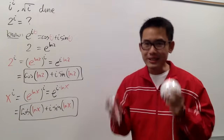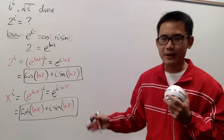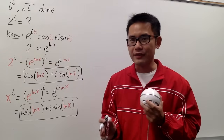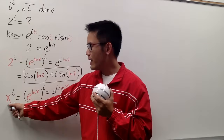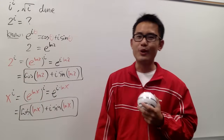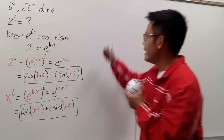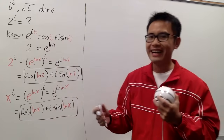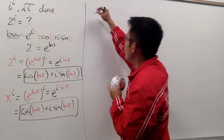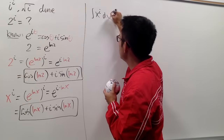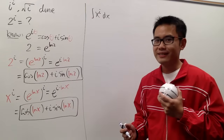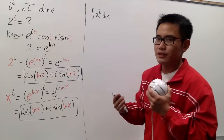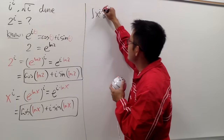Now we have x to some strange power — why don't we talk about integration? Let's try to integrate x to the i power, where i is the imaginary unit. We'll integrate x to the i power dx. Remember, we're integrating in the x world, so i is just like a constant. We'll just do the good old power rule backwards: we add 1 to the exponent and divide by the new exponent.